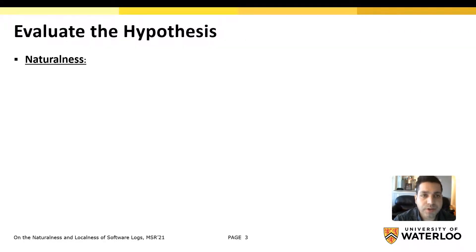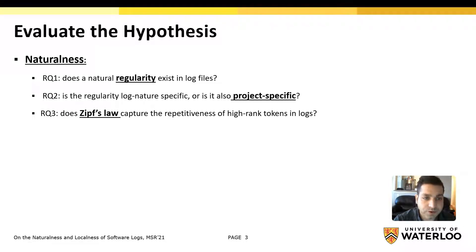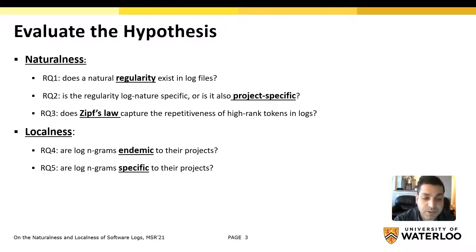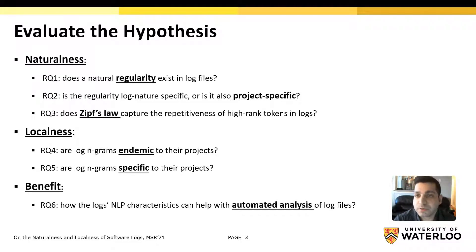We navigate our study through six research questions listed on this slide to validate our hypothesis. Research questions 1, 2, and 3 are concerned with the naturalness of the logs and assess the regularity, project specificness, and Zipf's law for eight different system logs listed in the paper, comparing with natural language text such as Wikipedia articles. Research questions 4 and 5 assess the localness of the software logs by showing that logs are endemic and specific to their corresponding software projects. Finally, in research question 6, we show the benefits of our approach in detecting anomalous log lines with an NLP-trained n-gram model.